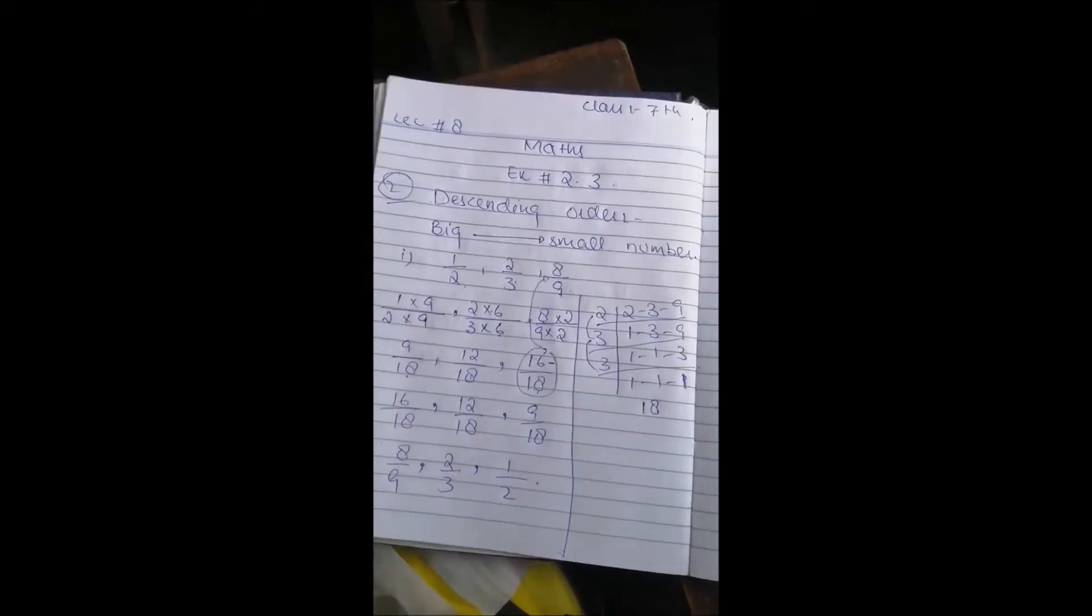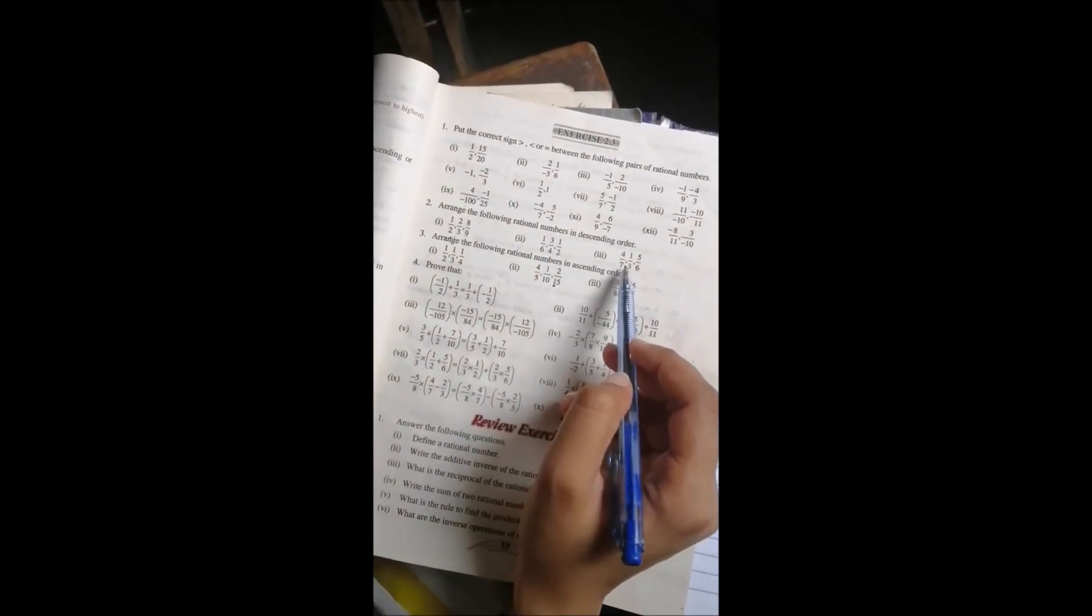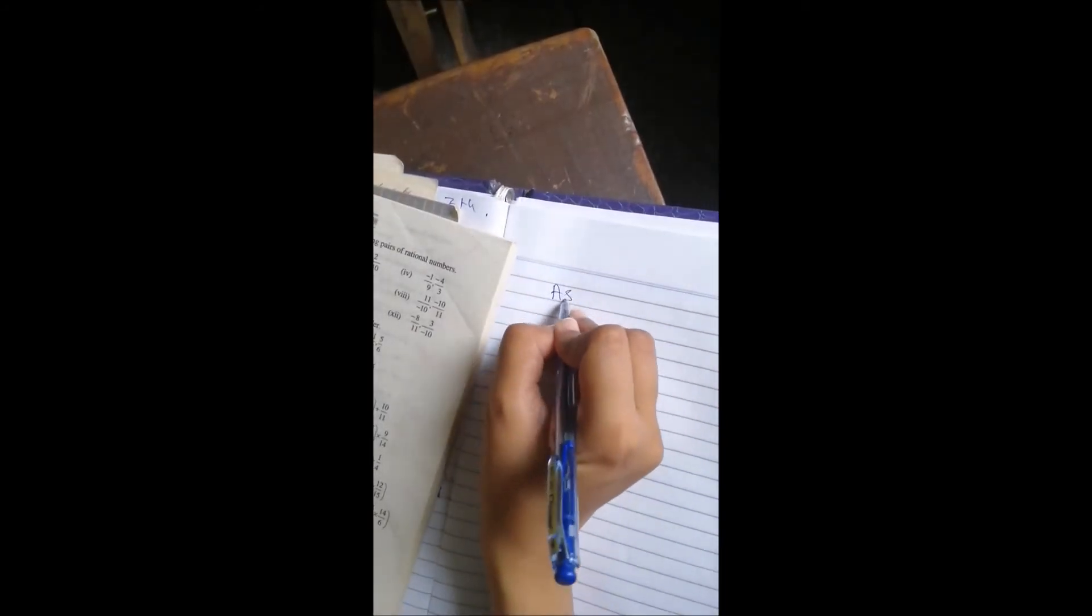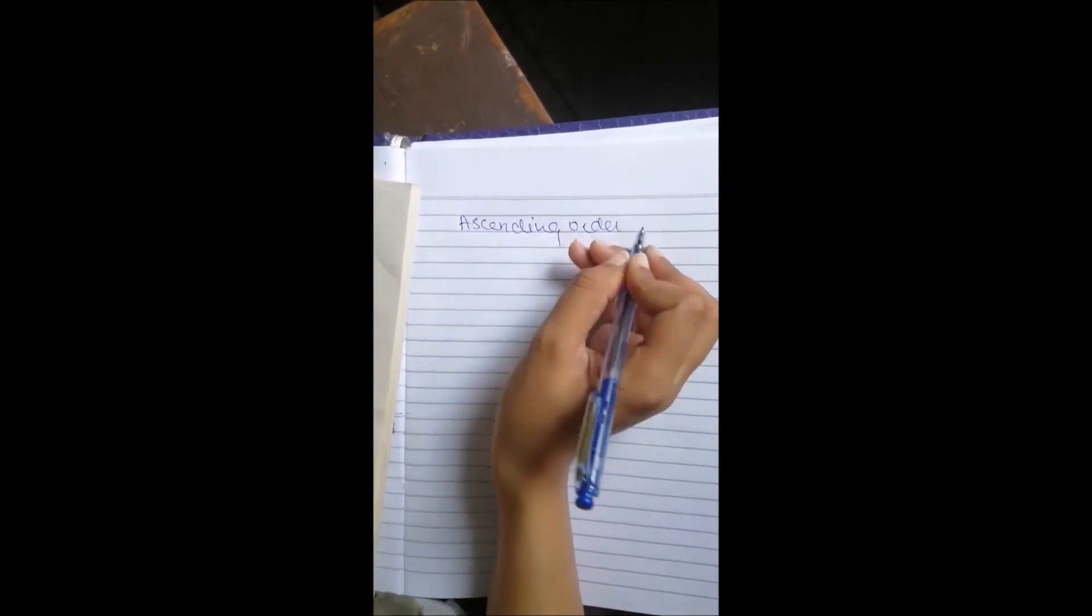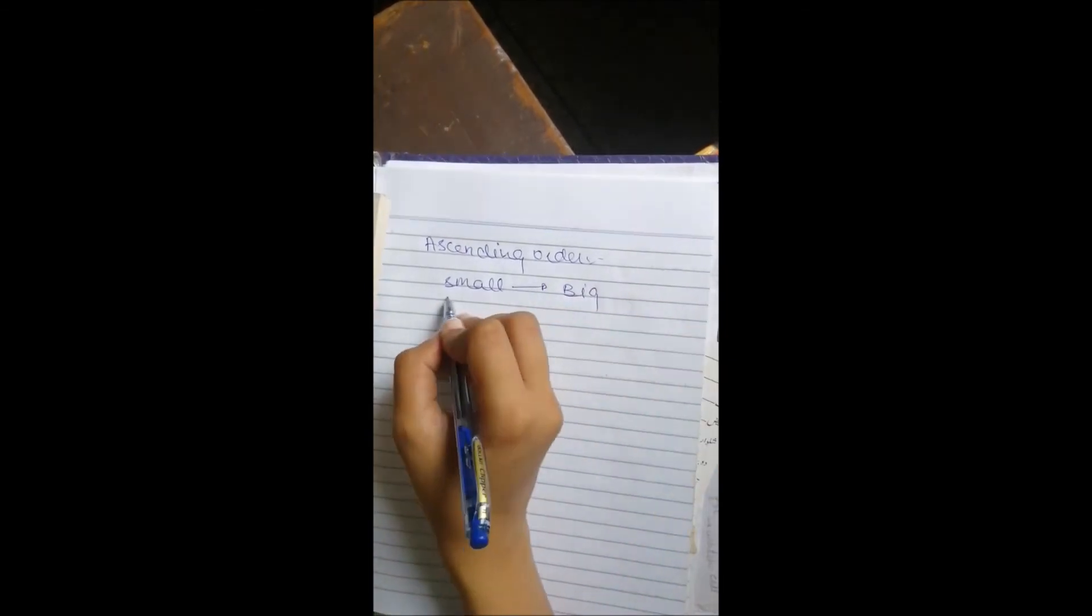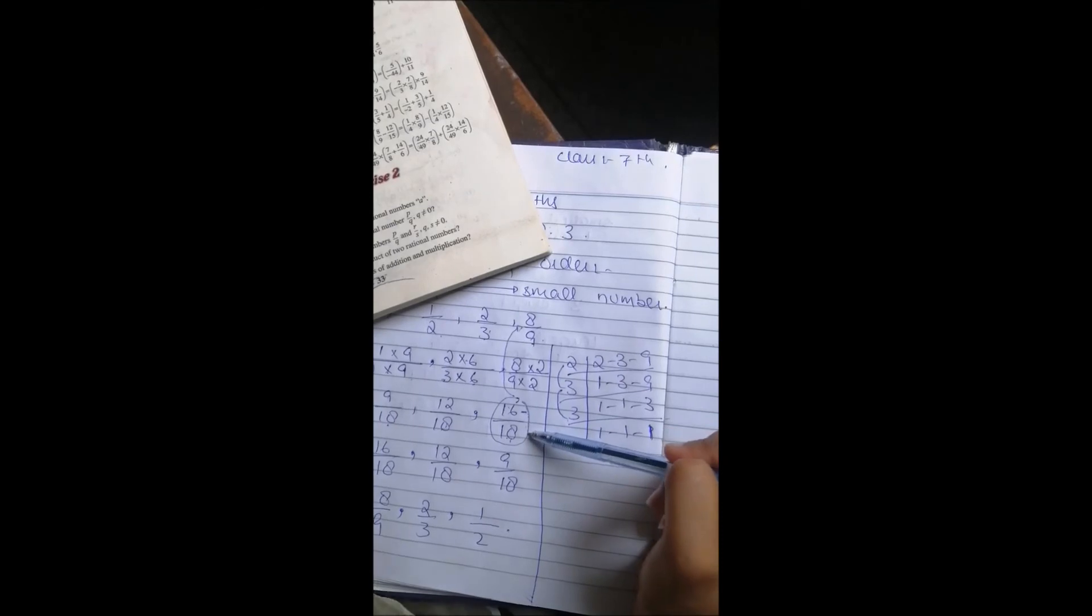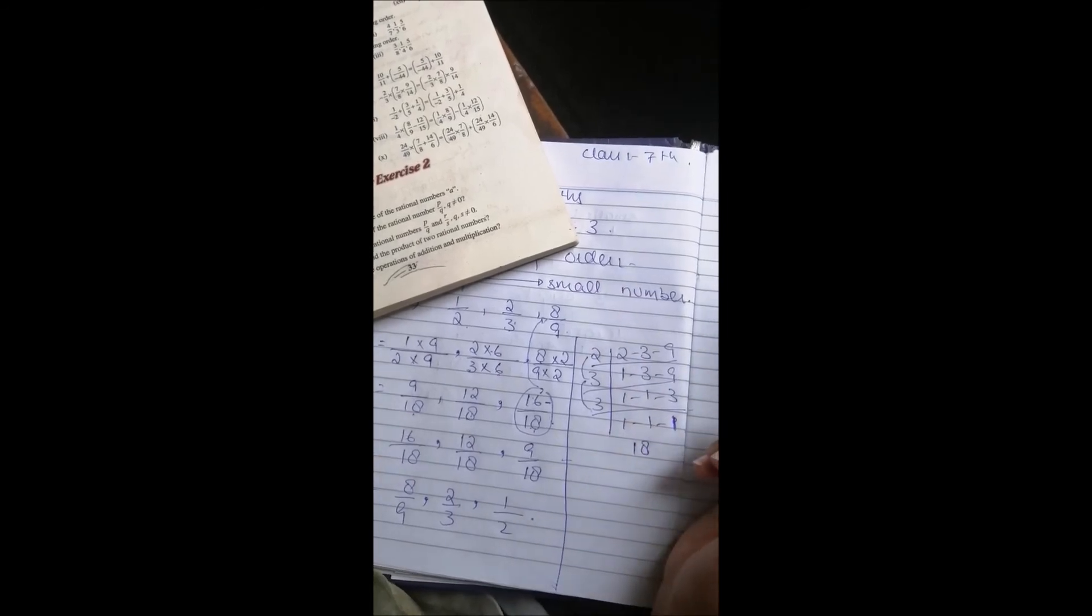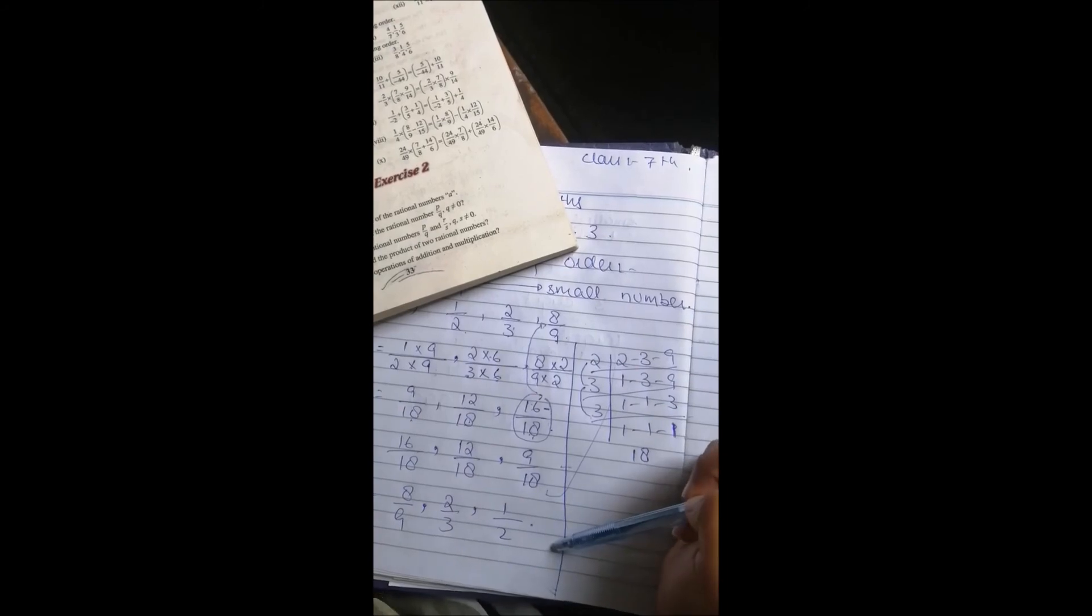Now you have to write down the other questions. Question number 3, you have to arrange them in ascending order. Ascending order is the order in which you make the numbers smallest to largest. You have to do the same denominators. The number will be smaller first, then bigger. Then you have to multiply them by the same denominators, then arrange them. Ascending is ascending order, descending is descending order. Then you have to write the answer.